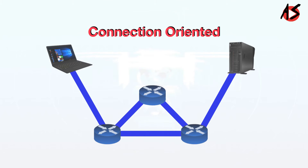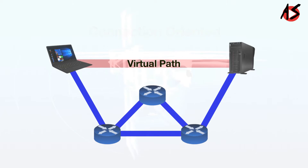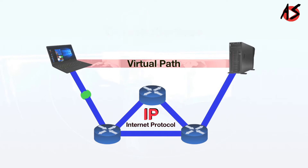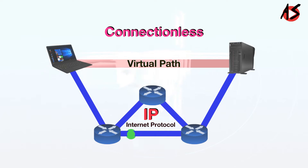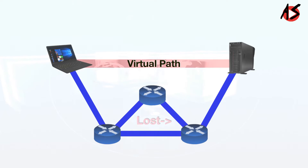TCP is a connection-oriented protocol, so it establishes a virtual path between the source and destination. TCP uses the services of IP, which is a connectionless protocol, to deliver the individual segments to the destination. TCP controls the connection itself and takes care of lost or corrupted packets and retransmits them.